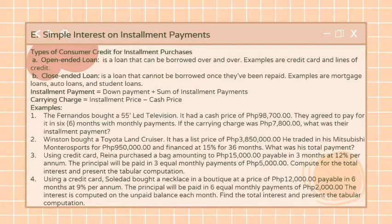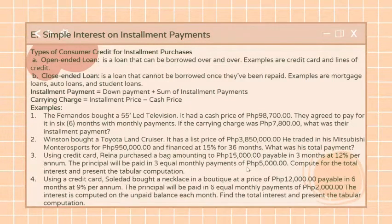Each payment made also increases the available credit limit, allowing the borrower to use the same credit over and over. On the other hand, a close-ended loan is a type of loan that cannot be borrowed once it has been repaid. As the borrower makes payments, the balance of the loan goes down and the borrower will not have any available credit on close-ended loans.